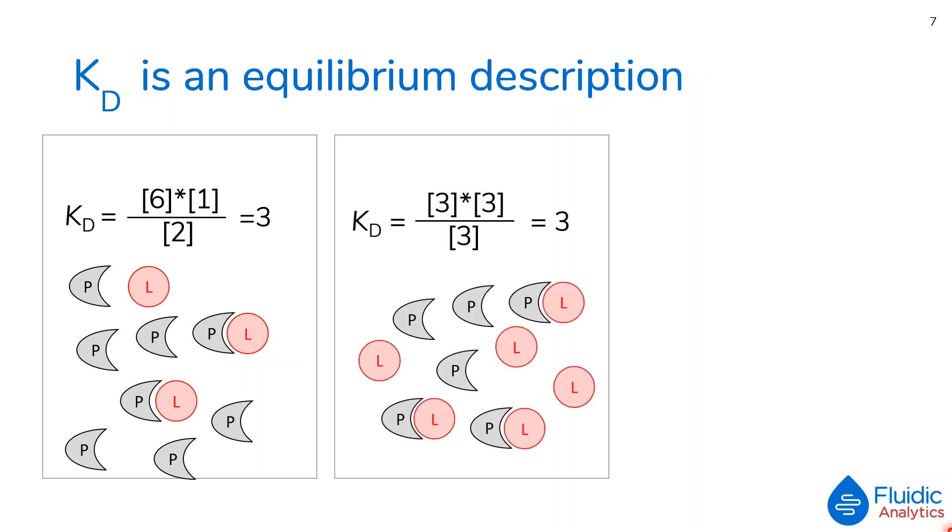If we look at a system where there is 6 ligands and 6 proteins, to meet a KD of 3, there will always have to be 3 proteins, ligands, and protein-ligand complexes at any given time.